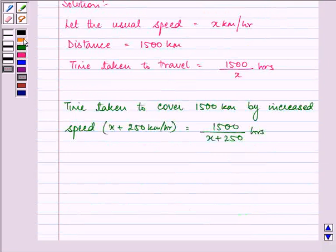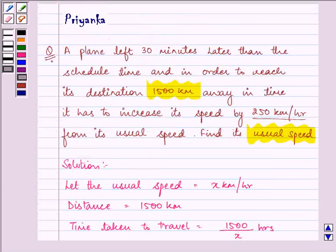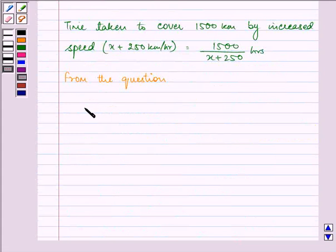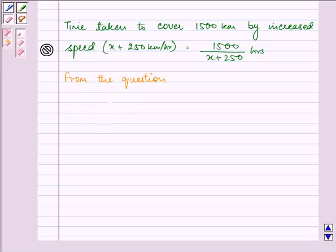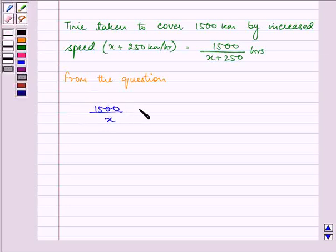Now from the question, a plane left 30 minutes later than the scheduled time and is reaching the destination in time. So that means 1500 upon x minus 1500 upon x plus 250 is equal to 30 minutes, that is half an hour.